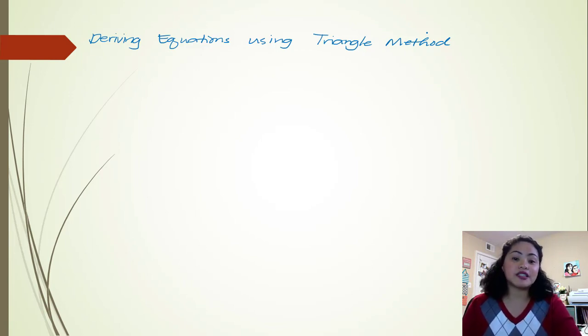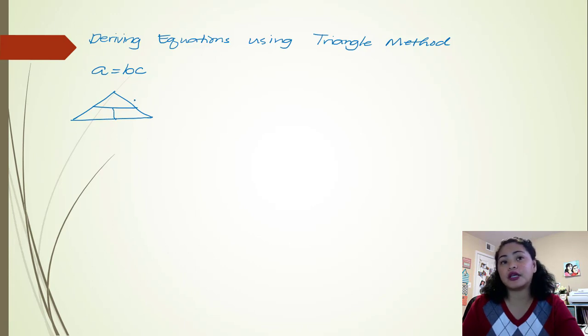So triangle method is only applicable for three variables. For example, we have a general equation of A equals B times C. So these are called the variables: variable A, B, and C. So we can create a triangle here, and since we have three variables, we are going to divide the triangle into three. Now, how do we plot or put the letters here?